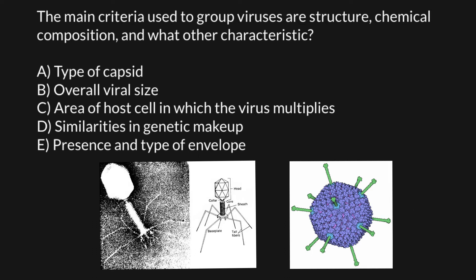Answer D: similarities in genetic makeup. Answer E: presence and type of envelope. Some viruses have an envelope — they acquire it when they exit the cell. This envelope is part of the outer cell membrane, and sometimes it can be a double lipid layer from internal cell organelles present in the cell.